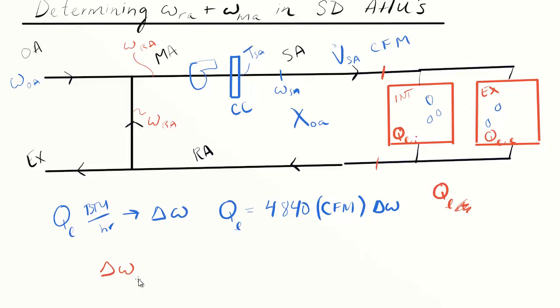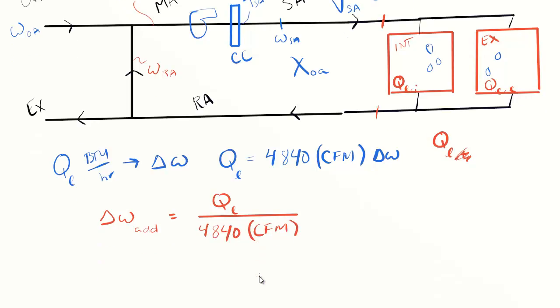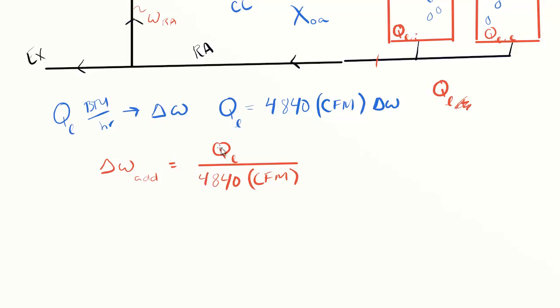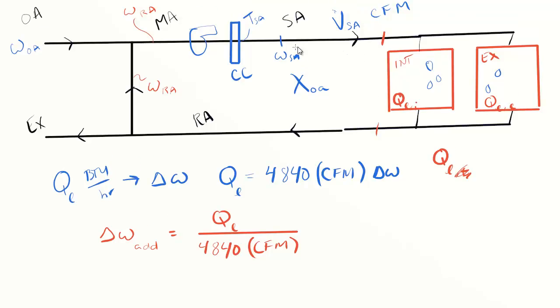If we want to know the delta difference in humidity ratio across from supply to return, that delta omega added is just the total latent load divided by our constant 4840 and the amount of dry air flow through the space. This is in BTU per hour and cubic feet per minute, the total CFM going through the single duct system.